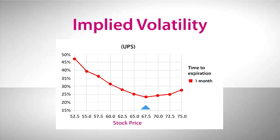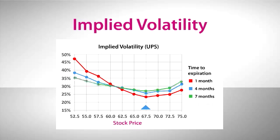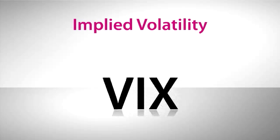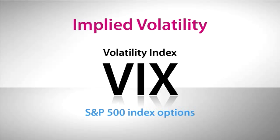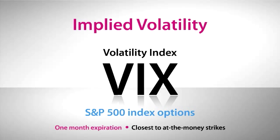Time to expiration also makes a difference. Here you can see a whole range of implied volatilities at various prices and different expirations. But traders generally tend to focus most on the implied volatility for options near where the stock is trading. In fact, you may have heard of the VIX, or the so-called fear index. VIX stands for Volatility Index, and it measures the implied volatility for S&P 500 Index options. It weighs all those different implied volatilities to provide a theoretical implied volatility for an S&P 500 option that trades at the money and expires in one month.